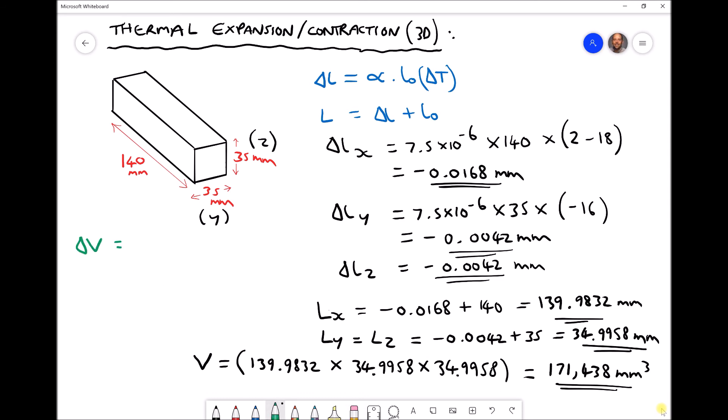Change in volume is the new volume V minus the original volume. Change in volume then is 171438 minus our original volume, which can be found by multiplying 140, 35, and 35. Our original volume, this part in the bracket here, actually comes out as 171500. Once again that's millimeters cubed.